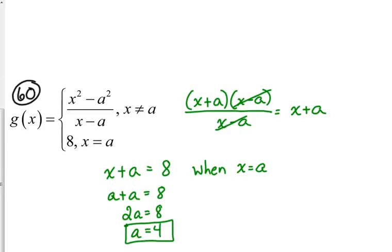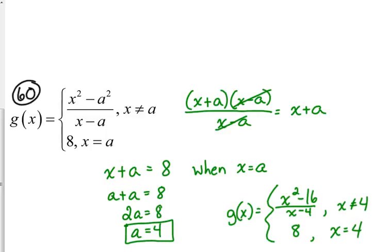So we can go back and rewrite this piecewise function so you can see what's going on. x squared minus 16 over x minus 4 when x is not equal to 4, and 8 when x is equal to 4. That's what this scenario ends up being.